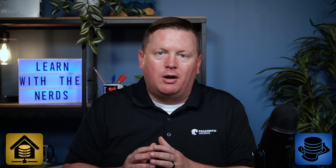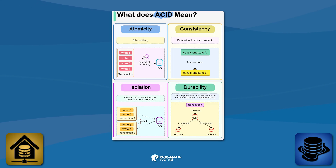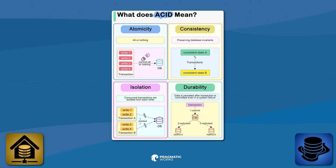Data Lakehouse combines the flexibility and cost efficiency of data lakes with the data management and ACID transactions of data warehouses. It's combining the best of both worlds — the ability to have unstructured data but then also put some structure on top of it. This hybrid approach enables business intelligence and machine learning on all data, providing a single system for both structured and unstructured data.